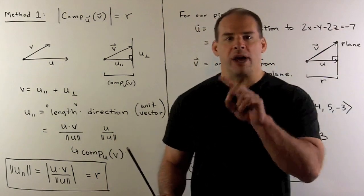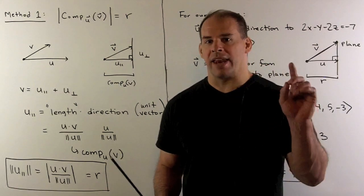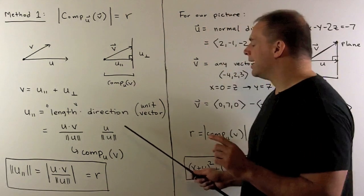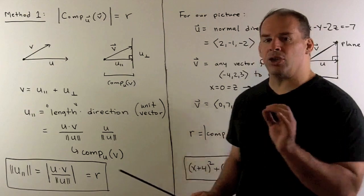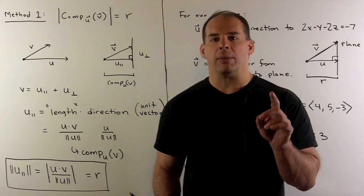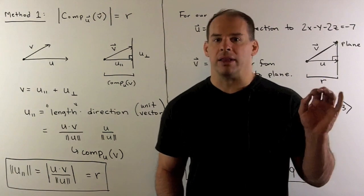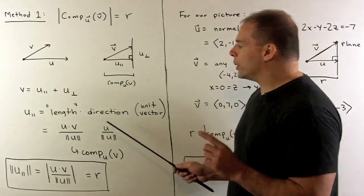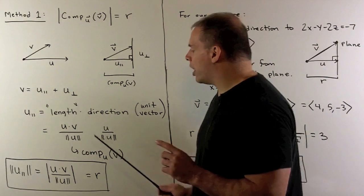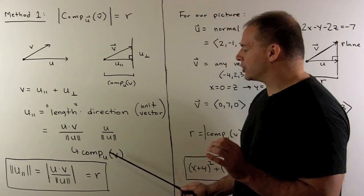Then I want to write the parallel part as a product of a length times a direction. By direction, we mean a unit vector, so a vector that has length 1. It might turn out that u is not a unit vector. I get a unit vector in the same direction as u if we divide by the length of u.